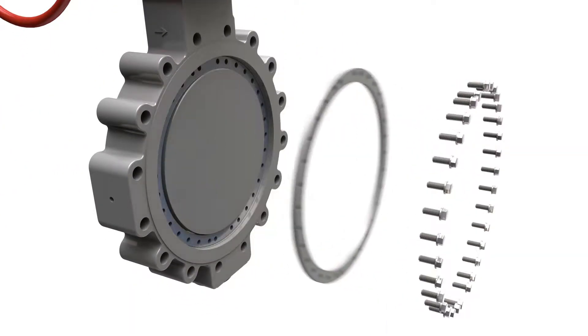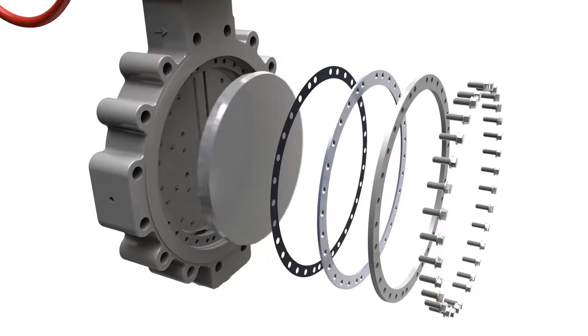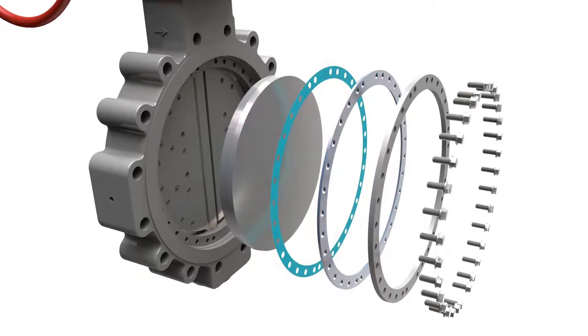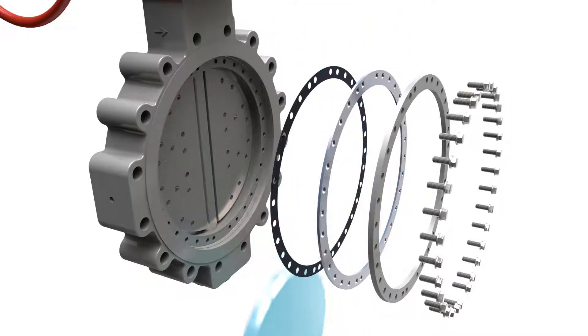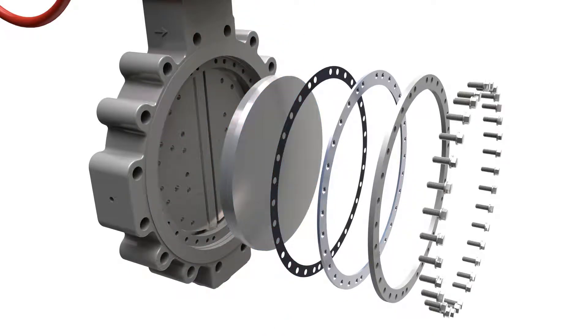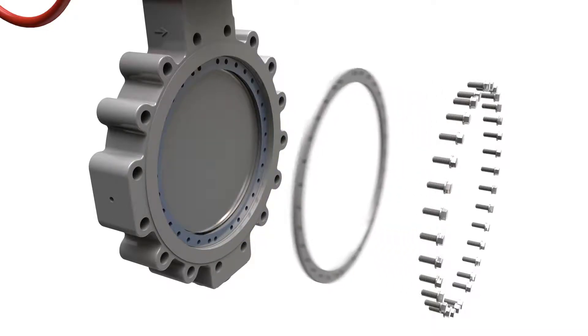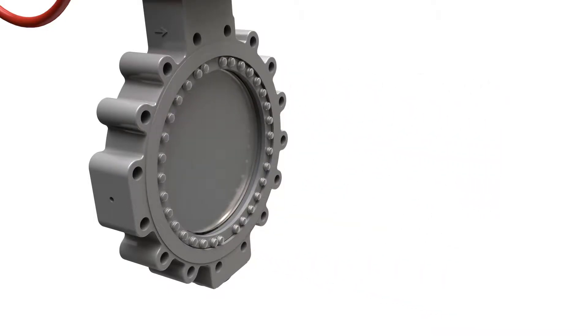Field replaceable seat rings and a two-piece disc design enable quick inspection, removal, and replacement without disassembly, letting you avoid costly plant downtime. Since you only need to replace the specified component rather than the entire valve body, you also realize significant savings for parts costs and labor.